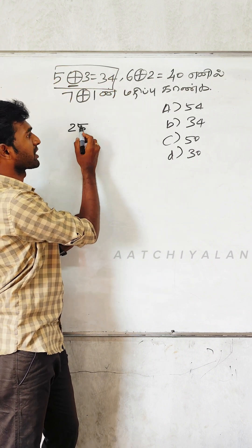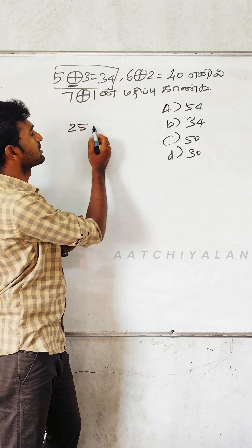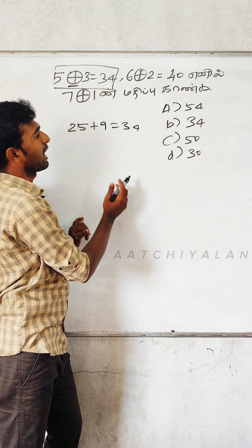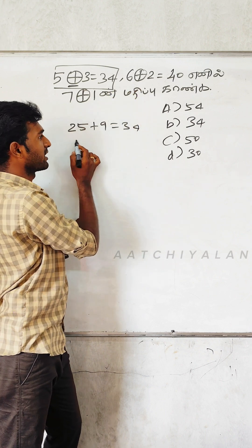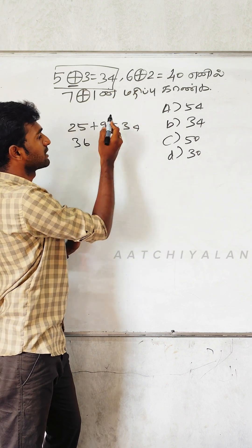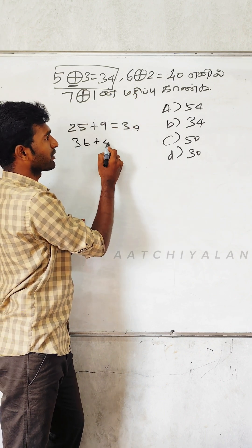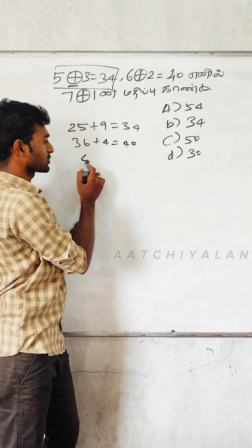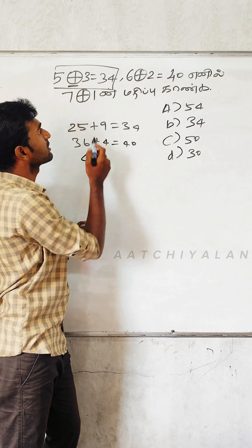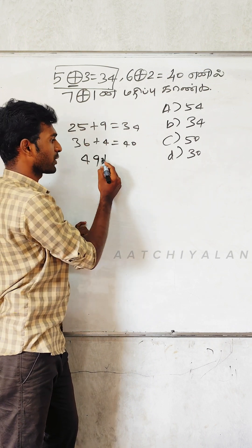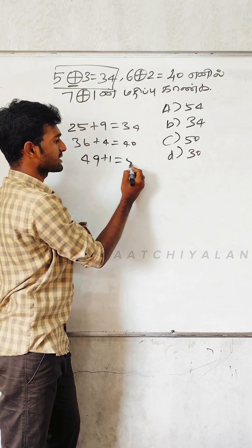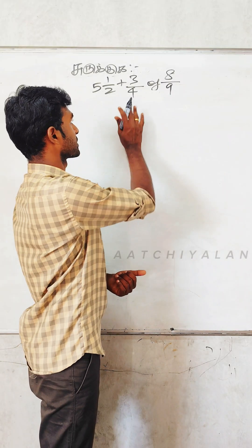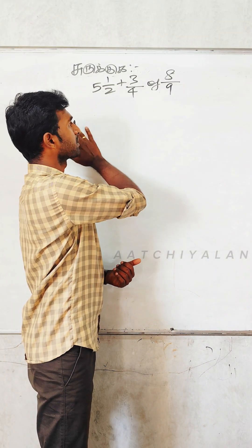5 squared is 25. 3 squared is 9. It's 34. 6 squared is 36. 2 squared is 4. It's 40. That's the same method. 7 squared is 49. 1 squared is 1. So, the answer is 50. This is a simple question.